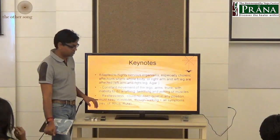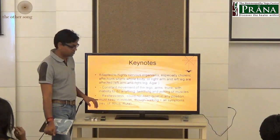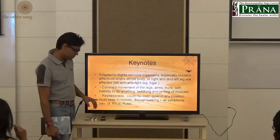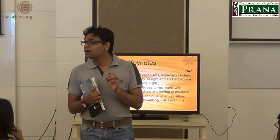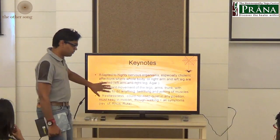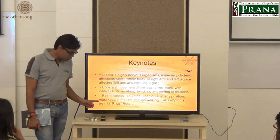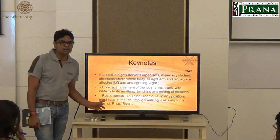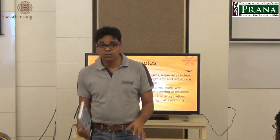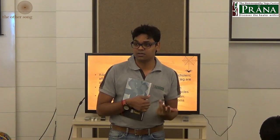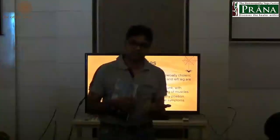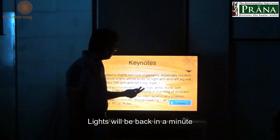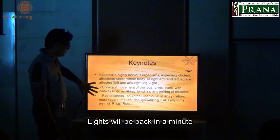Great restlessness — could not keep quiet in any position, must keep in motion, though walking aggravates all symptoms. This constant movement is compulsive — 'I don't want to move, but I have to move.' So it is uncontrollable and impulsive. Lax control, erratic, impulsive — they need to constantly move their hands and feet. It is not voluntary movement; they cannot help it.